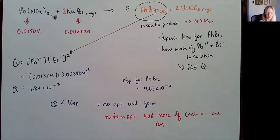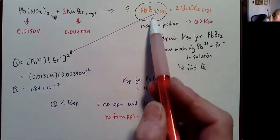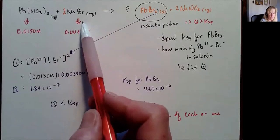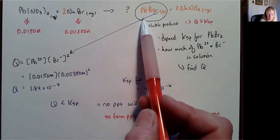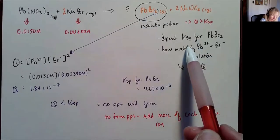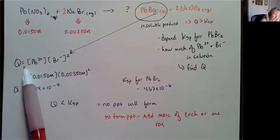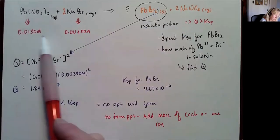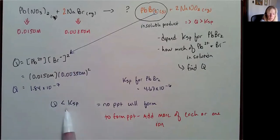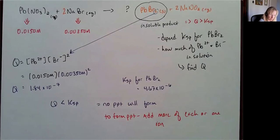So for these selective precipitation reactions, first figure out what is your solid — what is the potential insoluble product formed when you mix these two solutions? Look up the Ksp for that. Then find your Q based on your initial concentrations of those solutions. Then compare your Q and your Ksp — that's going to tell you if a precipitate is going to form or not.